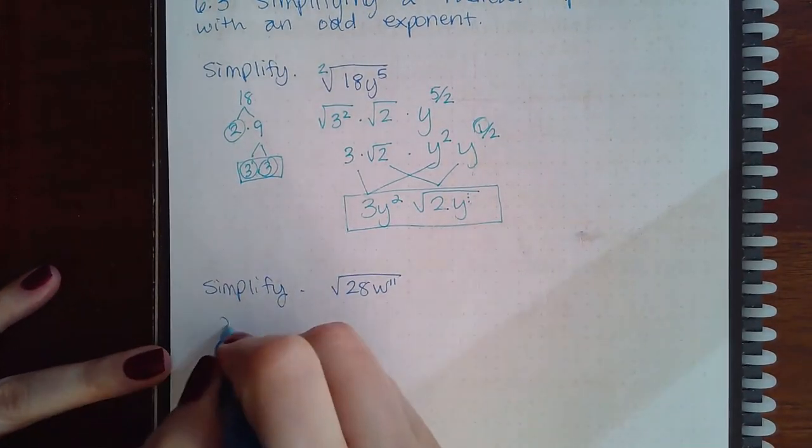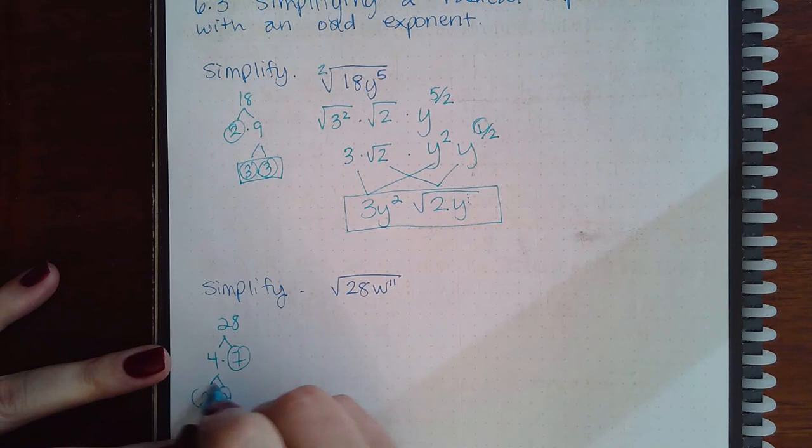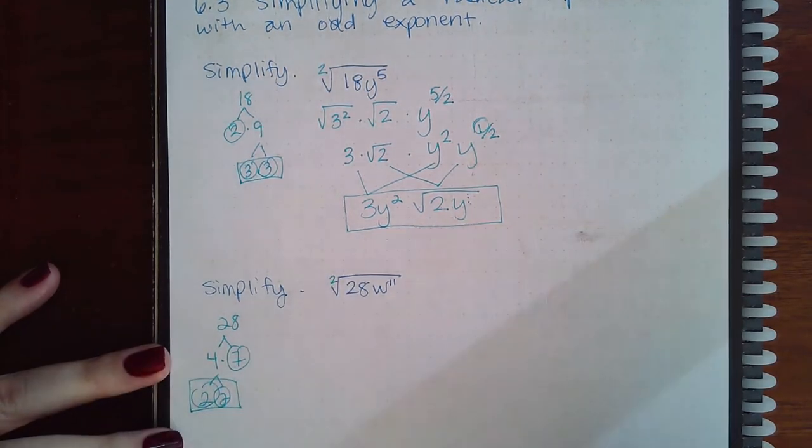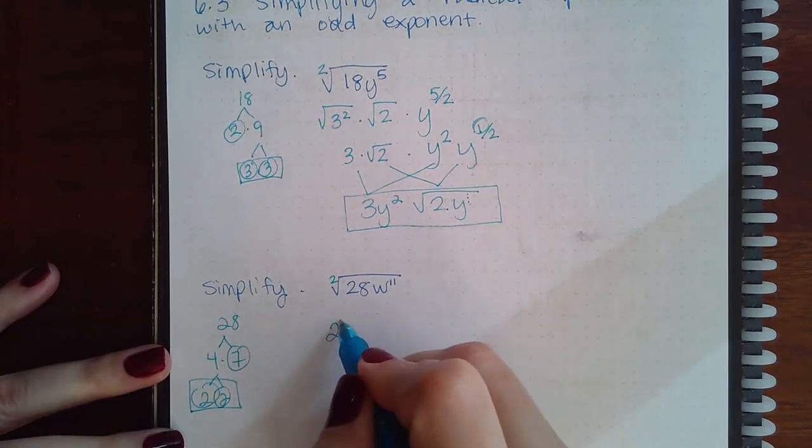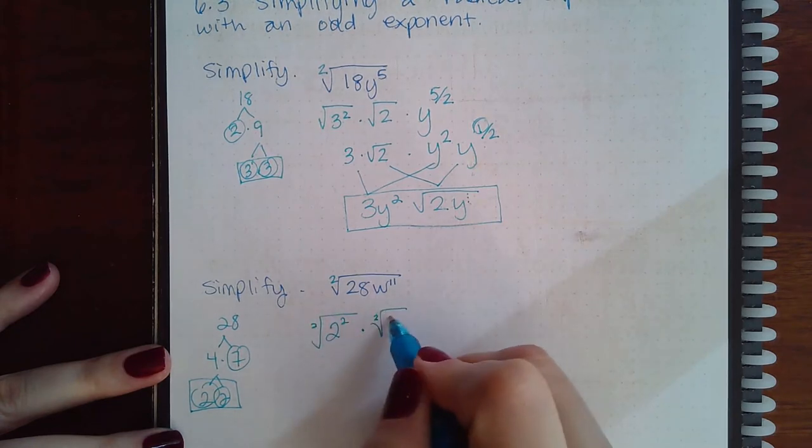Similarly for 28. We know that that's 4 times 7. This guy's prime. This is 2 times 2. I am doing a square root. So I want to put the pair together. So we're going to have 2 squared. And then the square root of 7.